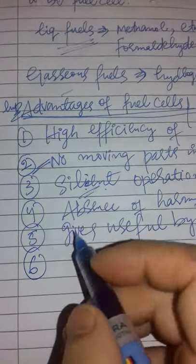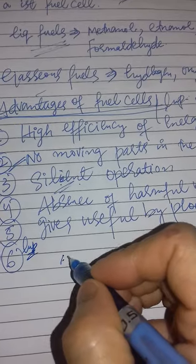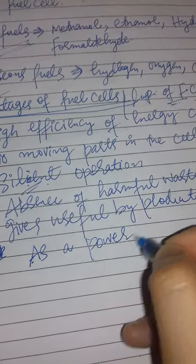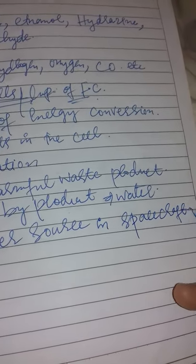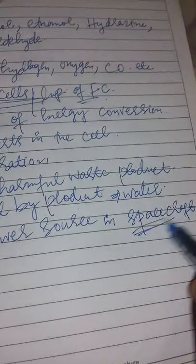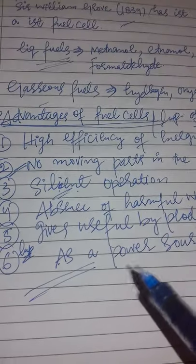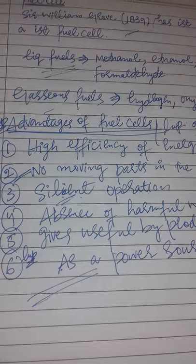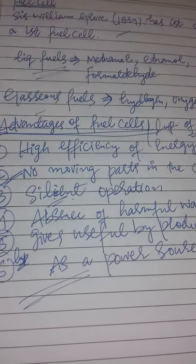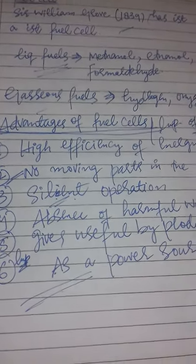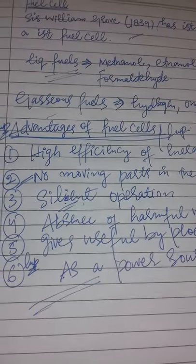Number six: fuel cells are used as a power source in spacecraft — this is a very important advantage. These are the key advantages of the hydrogen-oxygen fuel cell. In this video you have seen: the anode half-cell reaction, cathode half-cell reaction, the final equation 2H₂ + O₂ → 2H₂O, the efficiency of 75 to 80 percent, and the main advantages and importance of the fuel cell.